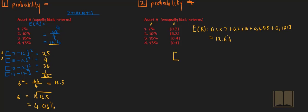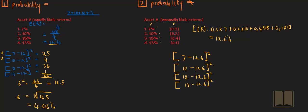To work out the risk associated with this scenario, we again need to take the squared deviations. The 7%, 10%, 18%, and 13% are all possible outcomes. We subtract each one from the expected return of 12.6% and square that. So the second one would be 10% minus 12.6% squared, the third one would be 18% minus 12.6% squared, and the last one would be 13% minus 12.6% squared. The difference here is that we've got probabilities associated with each deviation, so we need to incorporate those probabilities.